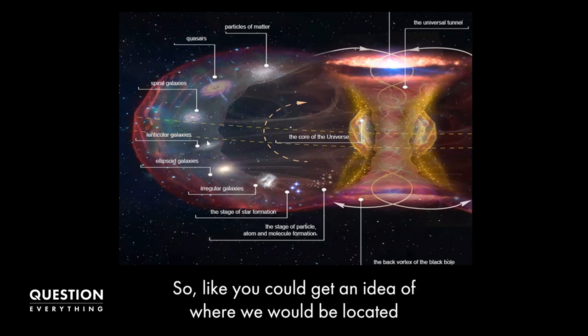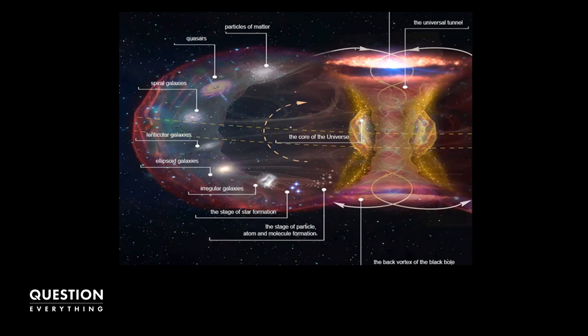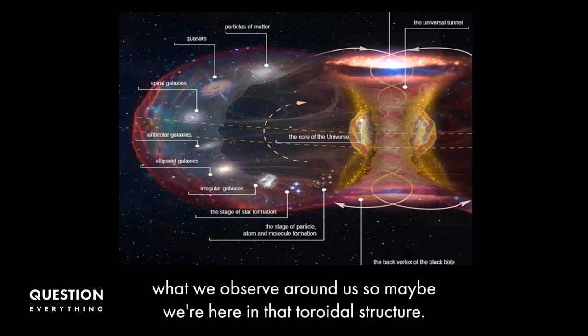And so you could kind of get an idea of where we would be located. Here you have galaxies that are of the level of structural complexity as what we observe around us. So maybe we're here in that toroidal structure.